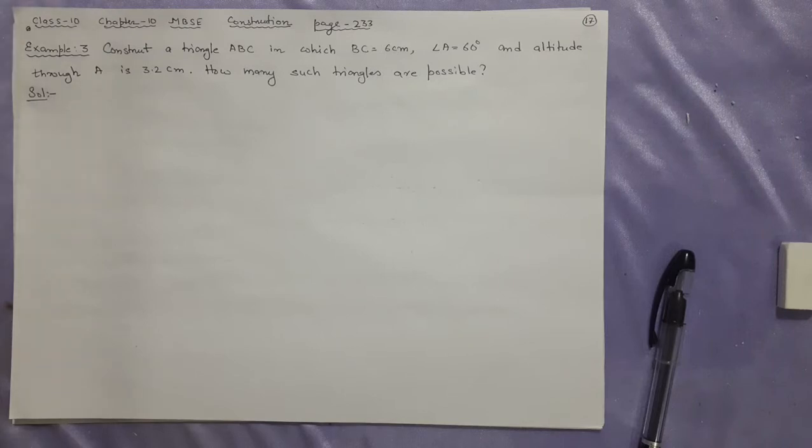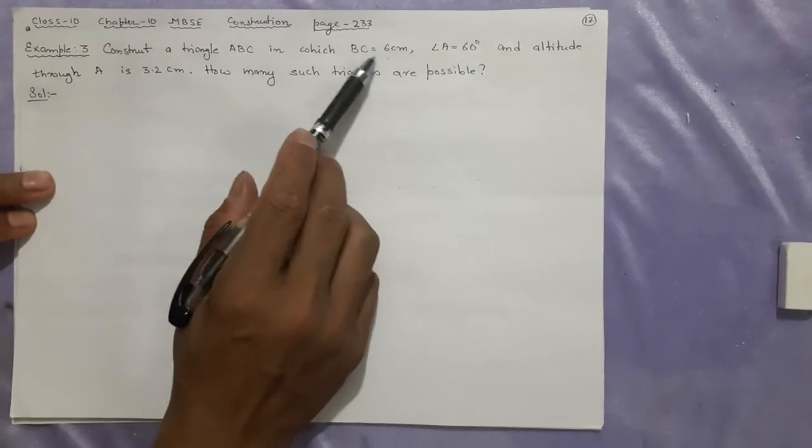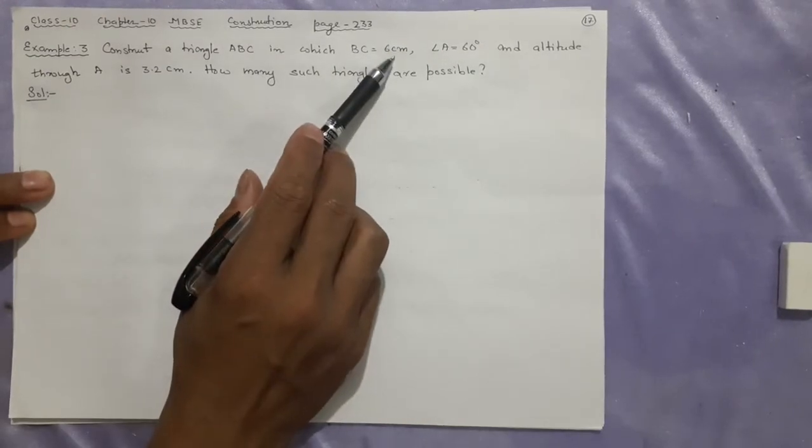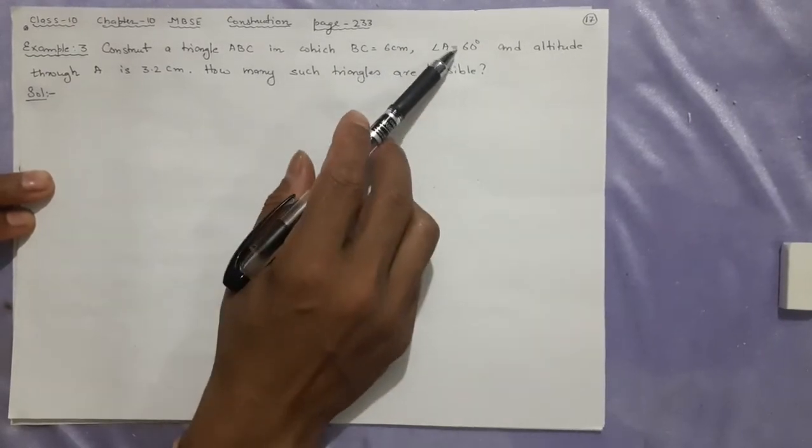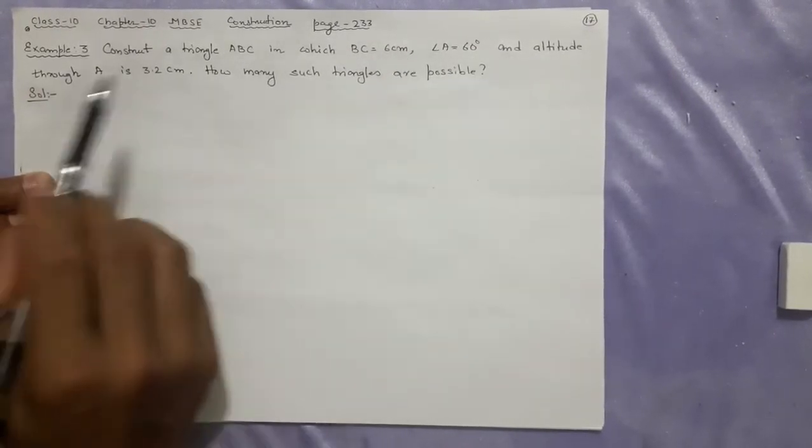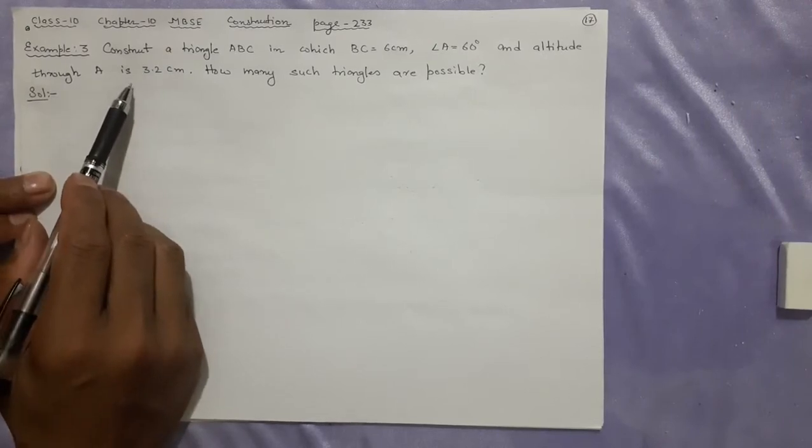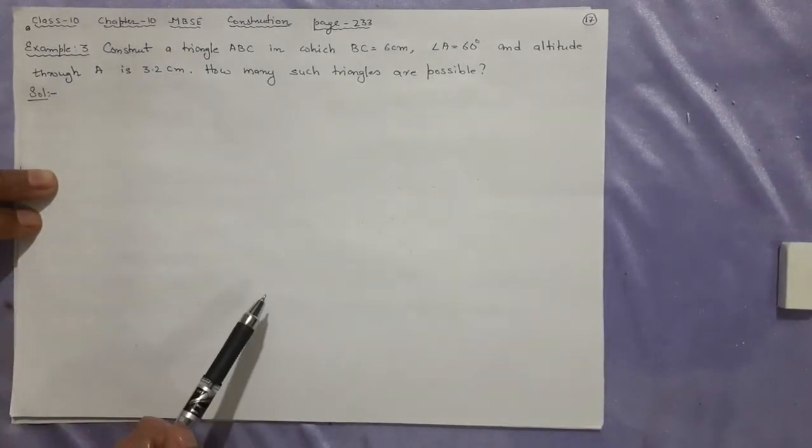First, the information is like this. Construct a triangle ABC in which BC is 6 cm, the base side is given, and the angle is 60 degrees. After that, altitude through A is 3.2 cm. So how many such triangles are possible? We have to draw and find out.